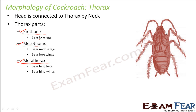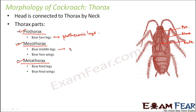The portion just below the head is the prothorax, below that is mesothorax, and even below that is metathorax. From prothorax the fore legs arise, from mesothorax the middle legs arise, and from metathorax the hind legs arise. The fore legs are also known as prothoracic legs, middle legs are called mesothoracic legs, and hind legs are called metathoracic legs.